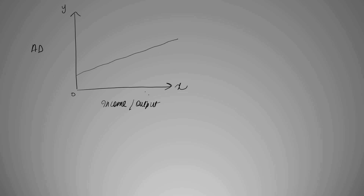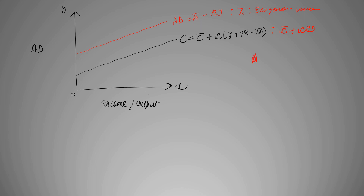Now assume this to be your consumption function, which is c equals... and this parallel line to be our AD curve, which is a plus cy, which we just derived. This c is c plus c times yd, which is our disposable income, and this was where we took all those exogenous variables. Now all the difference in between is your i plus g plus nx.